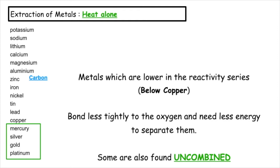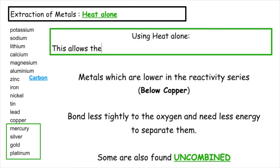When we're using heat alone, this allows the metal ions to gain electrons to form the metal atoms, removing the metal from the metal oxide.